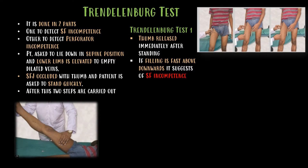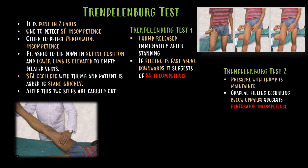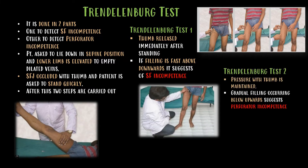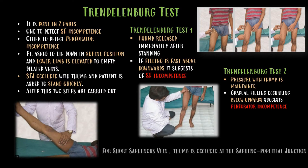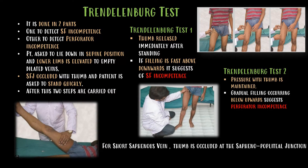If filling is fast from above downwards, it suggests saphenofemoral incompetence. In Trendelenburg test two, pressure with the thumb is still maintained; gradual filling occurring below upwards suggests perforator incompetence. For the short saphenous vein, the thumb is occluded at the saphenopopliteal junction instead of the saphenofemoral junction.